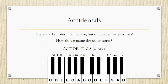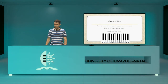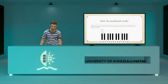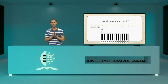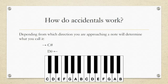If you look at it from the other direction, say you're looking at a D and you go down half a step to the black note closest to it on its left, we can call that D flat. Or from the E down a half step we can call that E flat, and so on. So how do accidentals actually work? It really depends on which direction you are approaching a note. The black note just above C can be either C sharp if you're coming from below going up, or D flat if you're going from D downwards. One note can be called C sharp if you're going up a half step from C, or D flat if you're going down a half step from D.